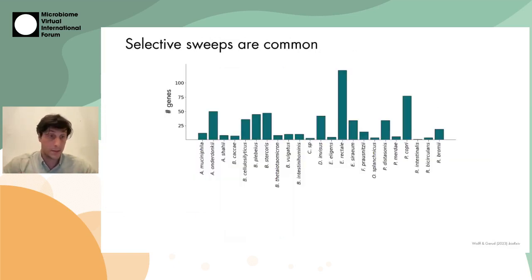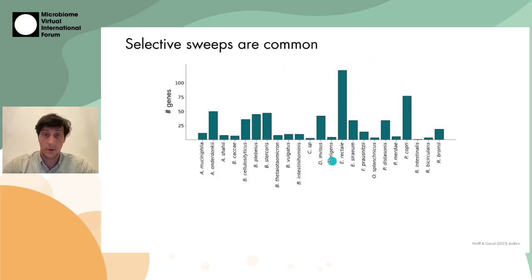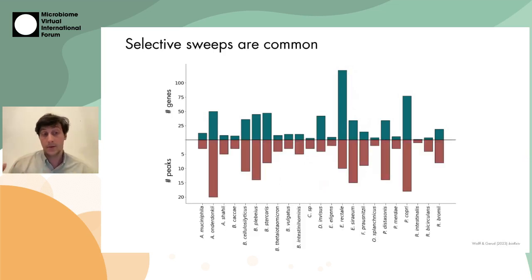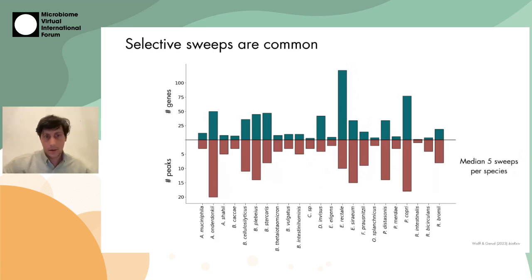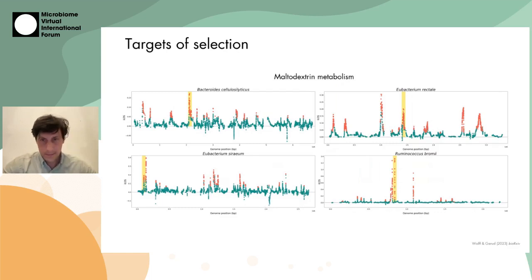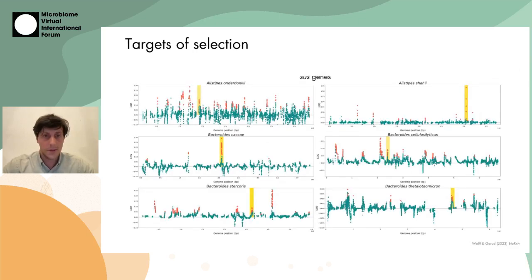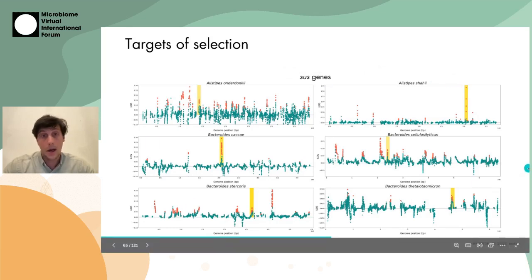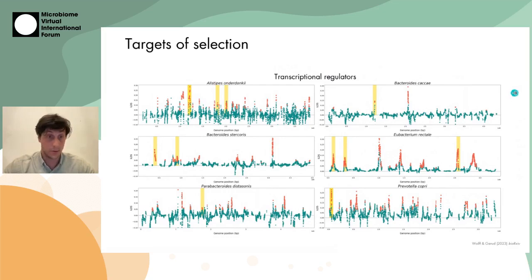Across about 30 high-quality species in our dataset, we looked at the number of genes appearing to be under selection — all species had some, ranging from many in Erectale to fewer in Collinsel, with about five sweeps on average per species. Looking at functional enrichment among the sweeps, maltodextrin metabolism genes showed up in multiple species with high statistical significance, possibly representing adaptation to Western diets. Starch utilization system genes — the SUS genes, famously SUS-C and SUS-D — were also repeatedly under selection, as were transcriptional regulators.